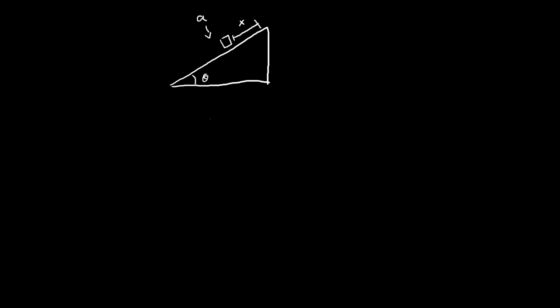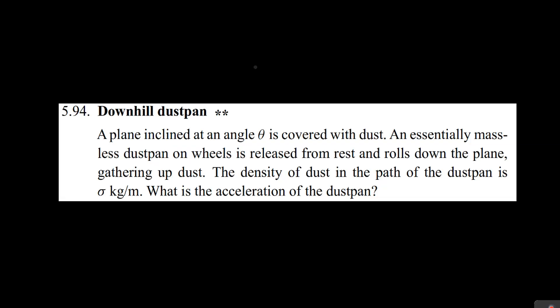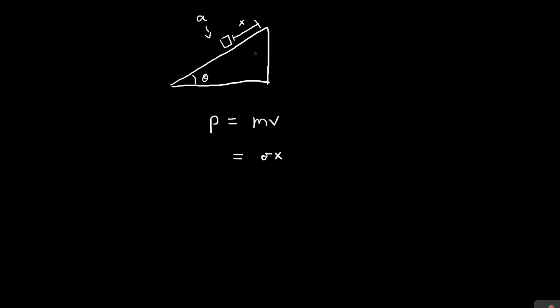How do we find this? Well, the key is to consider the momentum. So what is the momentum of the dustpan for a given x? Momentum is equal to mass times velocity, and the mass is going to be σx, because sigma is the density. After traveling x meters down the slope, we would have accumulated σx amount of dust. And velocity is just x-dot, the time derivative of x.